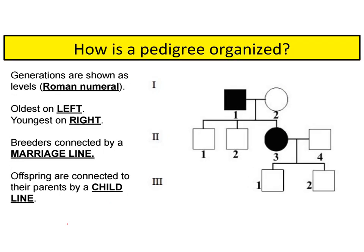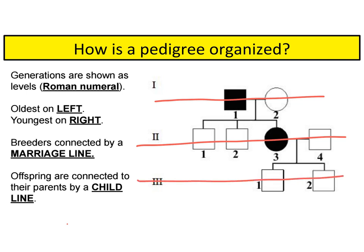Pedigree charts are organized in a very specific way. First, each generation of individuals is shown as a different level of the chart. Most of the time, but not all of the time, the generations will be labeled with Roman numerals.